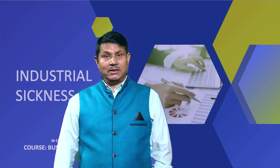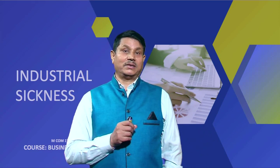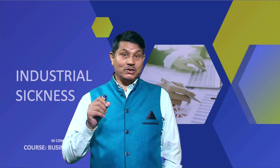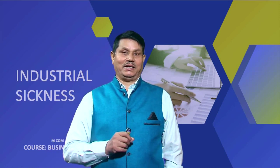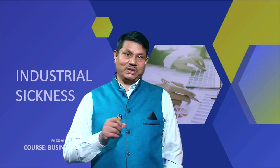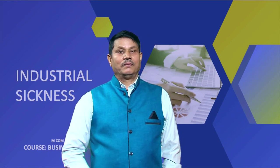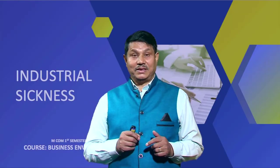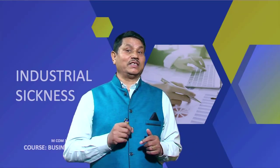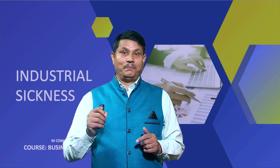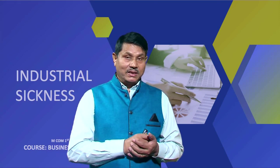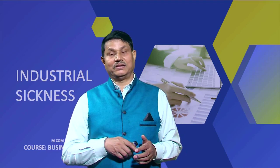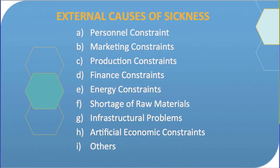One of the most important external causes of industrial sickness is personnel constraints. Sometimes, the skilled labor or manpower needed for the industry may not be available in the market. Non-availability of skilled labor creates personnel constraints. The next external cause is marketing constraints — sickness may arise due to liberal and tough licensing policies, restraint of purchase by bulk purchasers, changes in global marketing scenario, excessive tax policies by the government, and market recession.